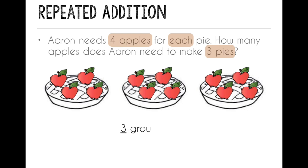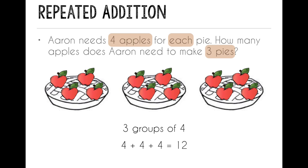So now I have 3 groups of 4, and if I'm using repeated addition, I would add 4 plus 4 plus 4 to get a sum of 12. I can also multiply to find this. Three groups of 4, so I would say 3 times 4 to get that same sum of 12.